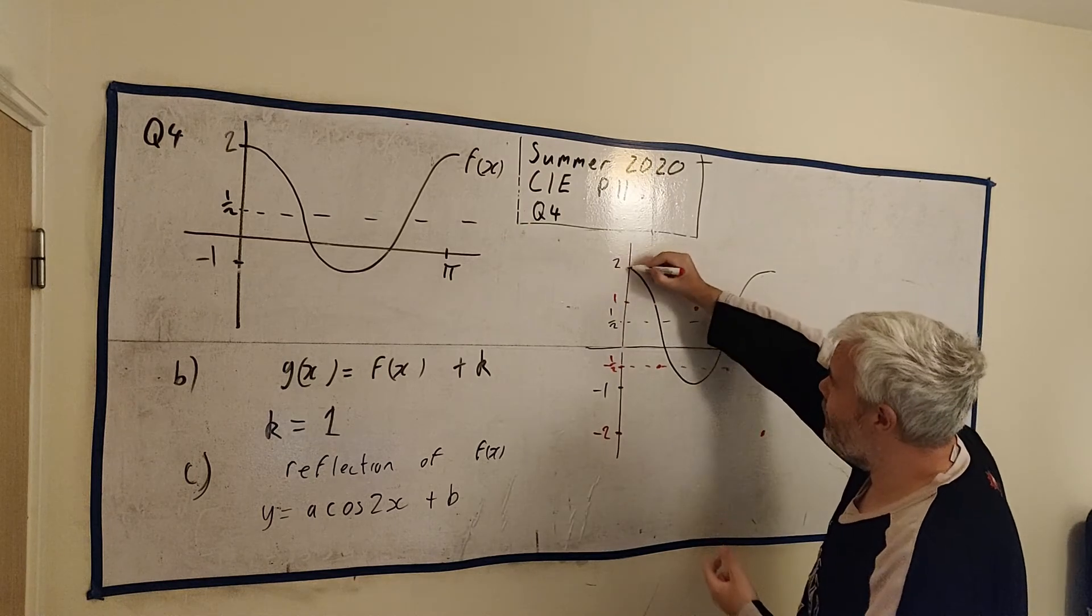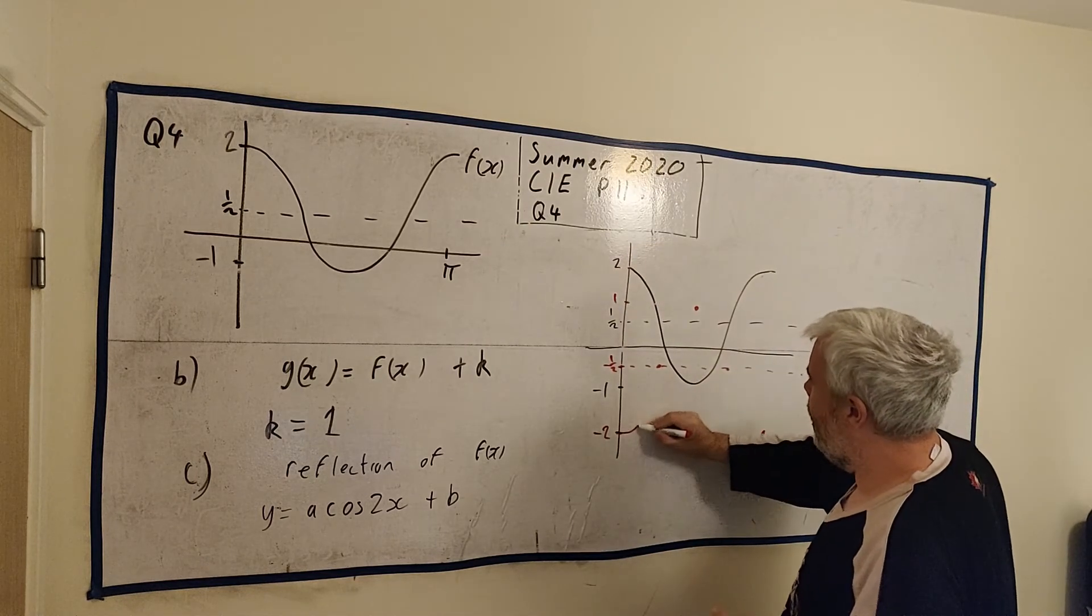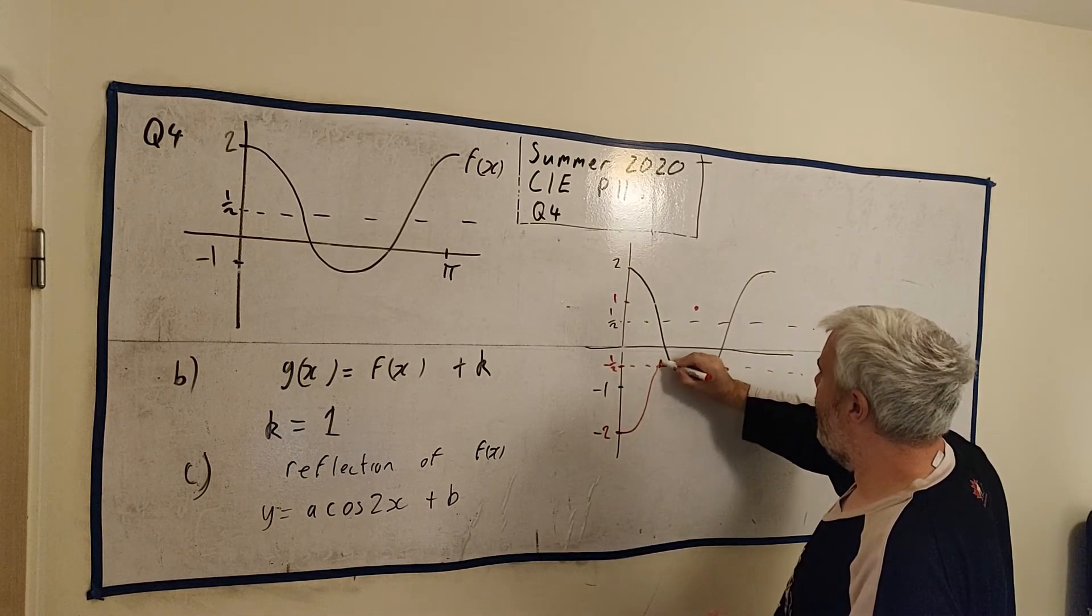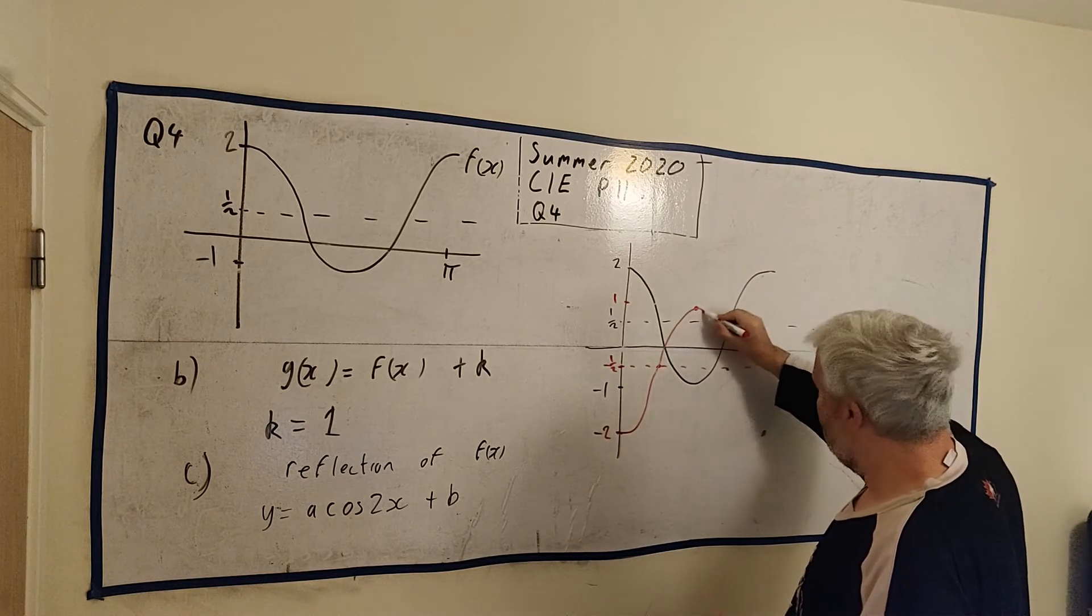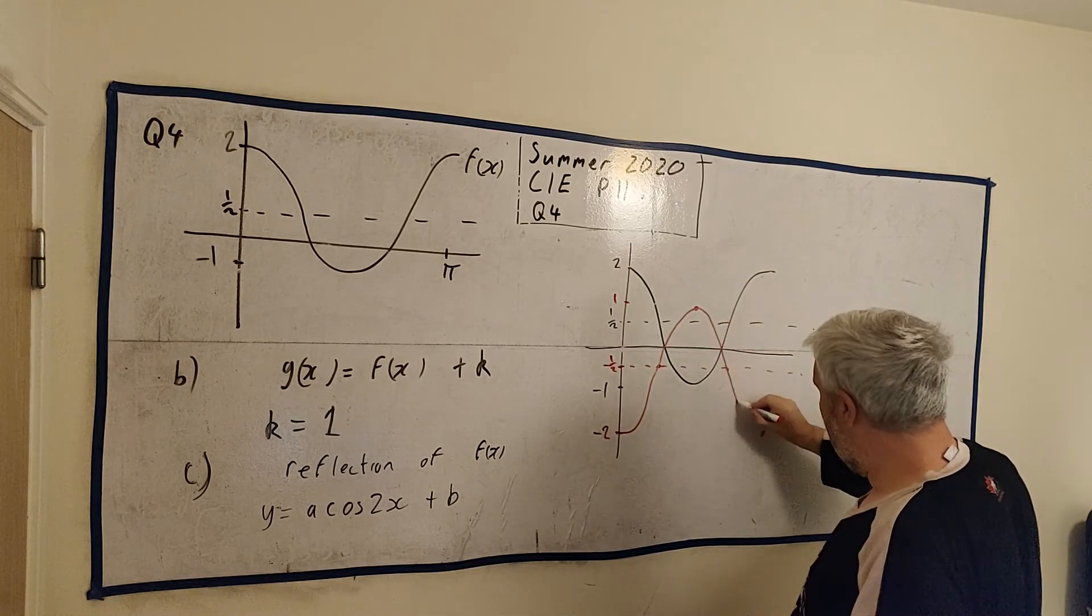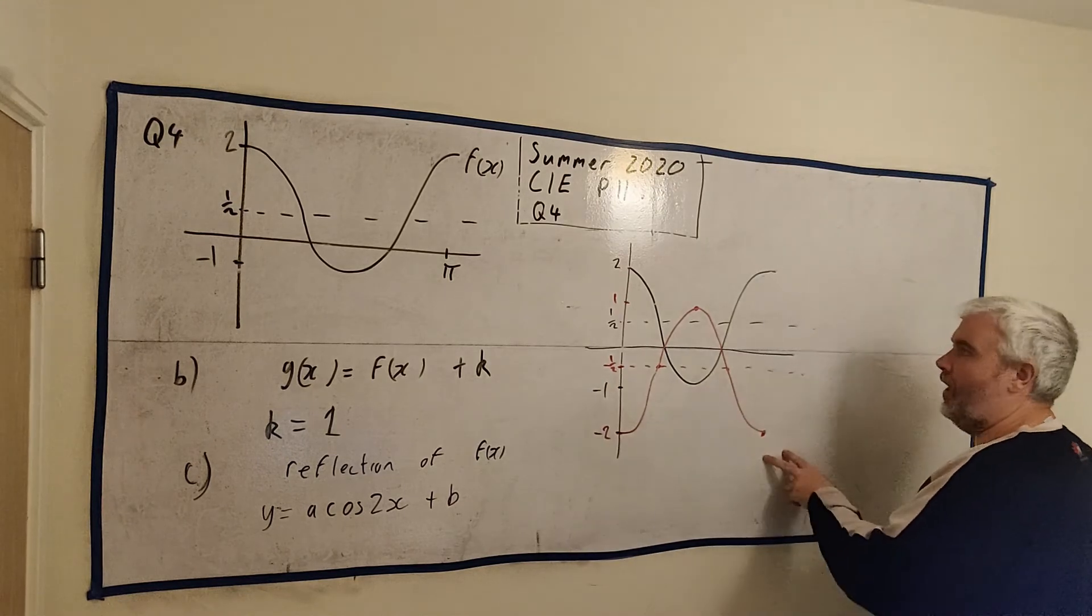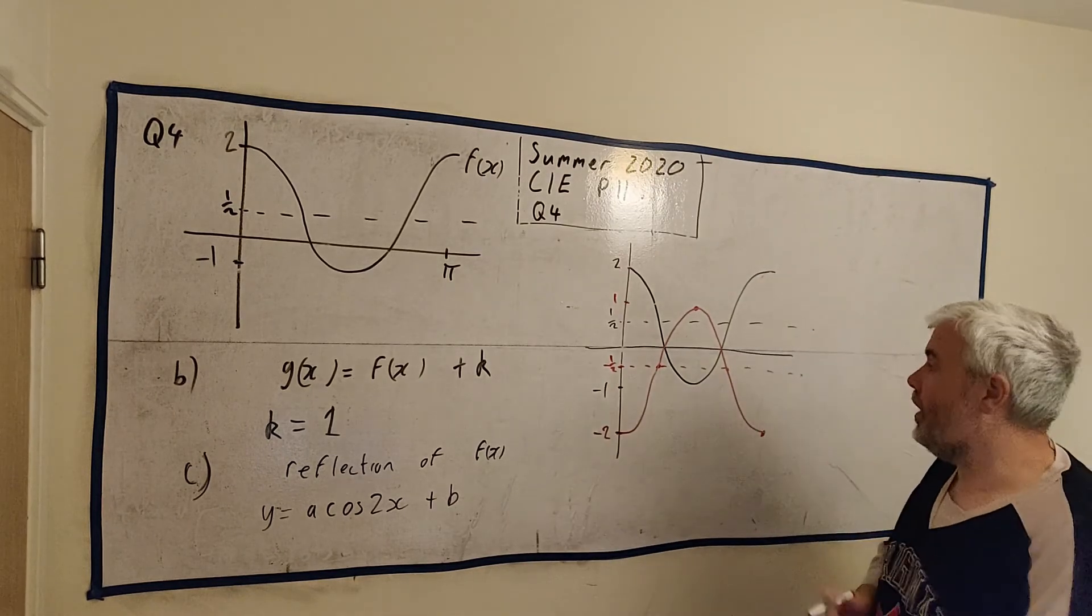And if we draw that in, it'll have the same shape. It'll come out slowly. Go up. Let's see. Go through there. Turn. Go through there. And come down. Flatten out again. That's what a mirror image looks like.